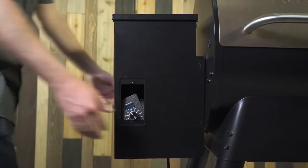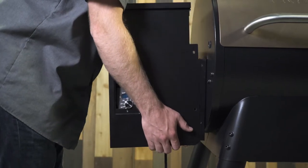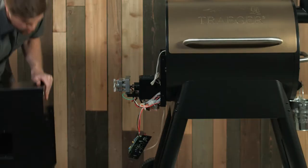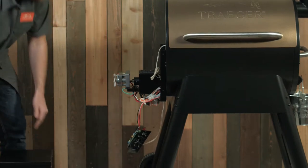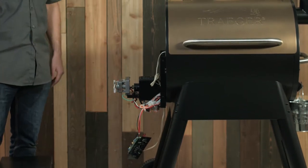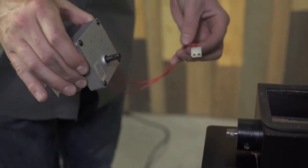Once those screws are removed, you'll be able to lift from the bottom, lift the hopper off the side of the grill and set it aside. Now that you can see the inside of your hopper, locate the auger motor. It's the one with the red wires coming out of it.